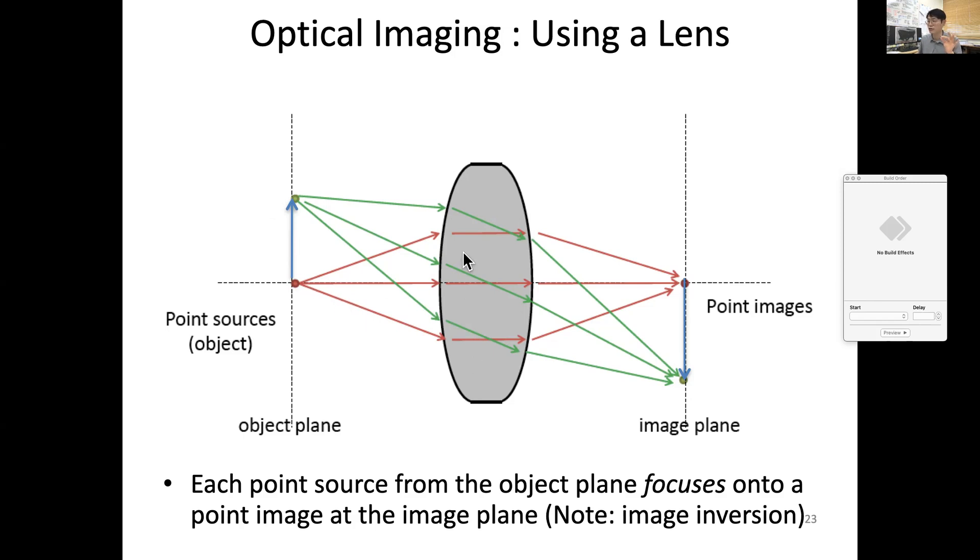When it goes center it doesn't change, but at this interface it goes toward the higher refractive index, which eventually means the light converges and focuses down. Likewise, the light coming from the bottom of this arrow initially diverges, but through this lens it bends toward the high refractive index and converges to a point. So it's a one-to-one mapping of point images onto the plane.